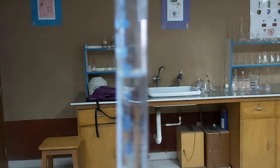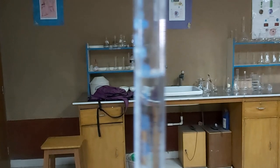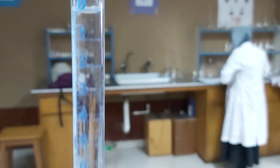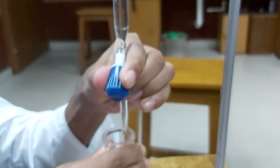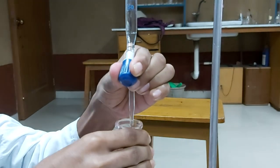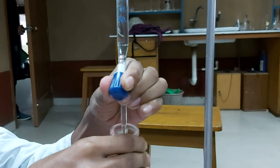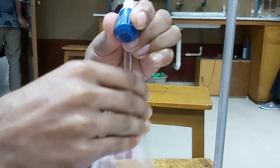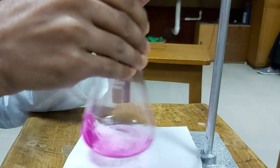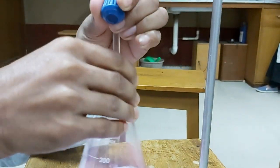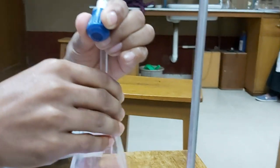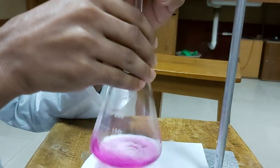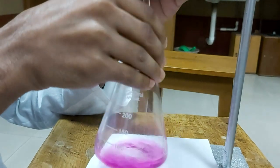The person titrating has taken his left hand on the knob of the burette and the conical flask in his right hand. After addition of each drop of titrant to the analyte, he is shaking so that it can react simultaneously.